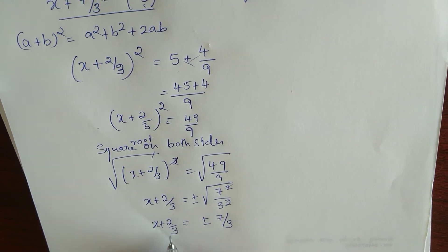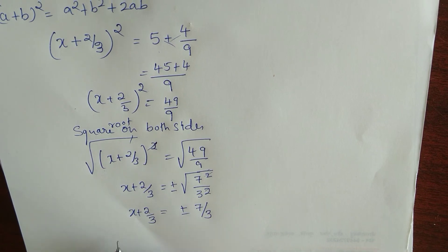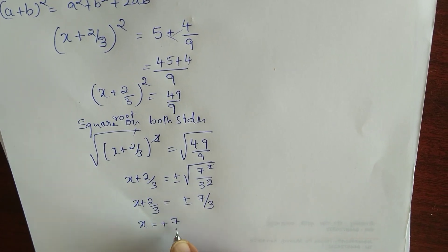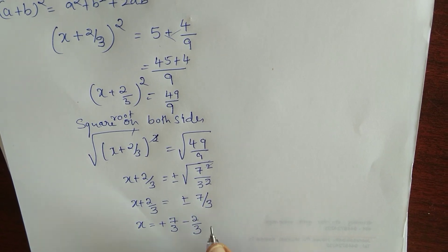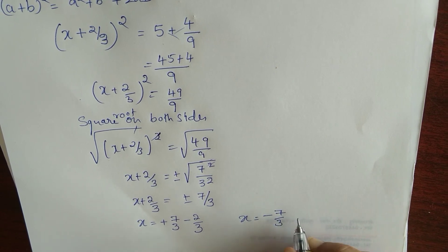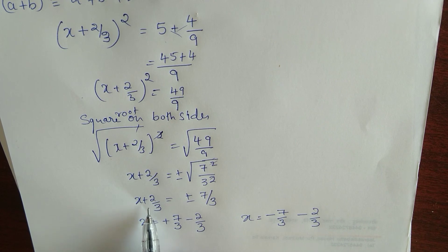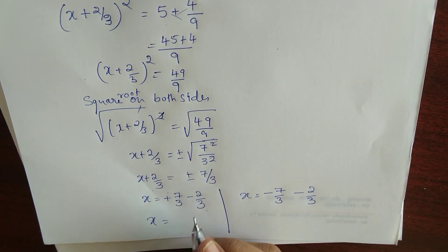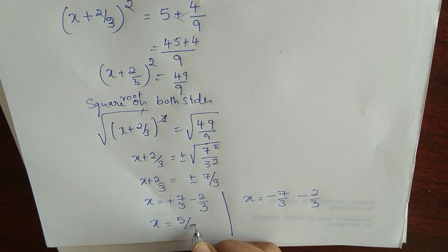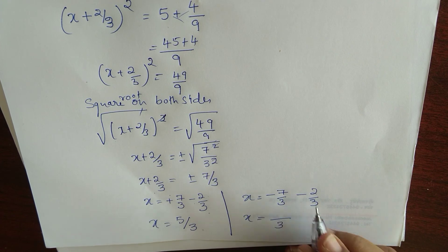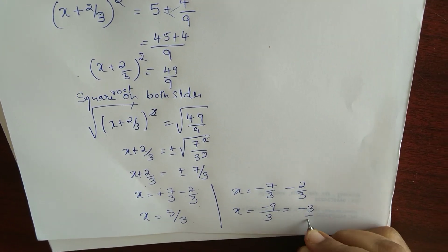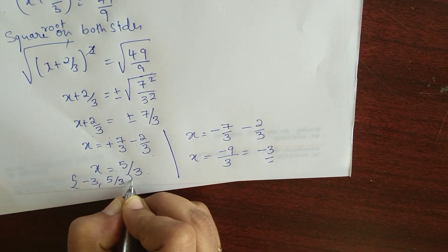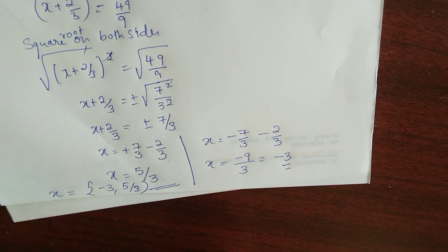So x is equal to plus 7 by 3 minus 2 by 3, or x is equal to minus 7 by 3 minus 2 by 3. For the first root, 7 minus 2 is 5, so x equals 5 by 3. For the second root, negative 7 minus 2 is negative 9, so x equals negative 3. The two solutions are x equals 5 by 3 and x equals negative 3.